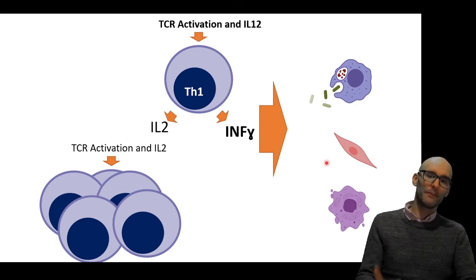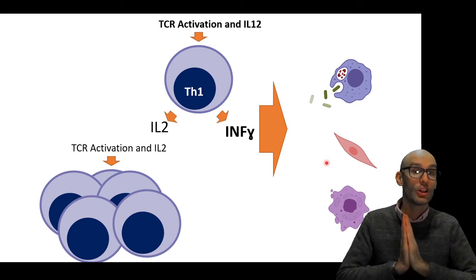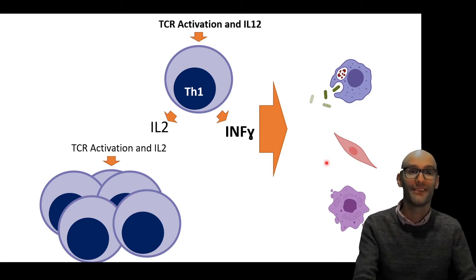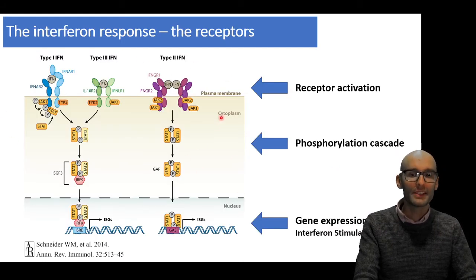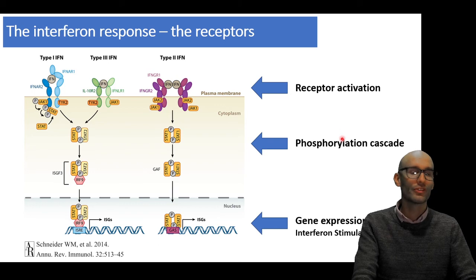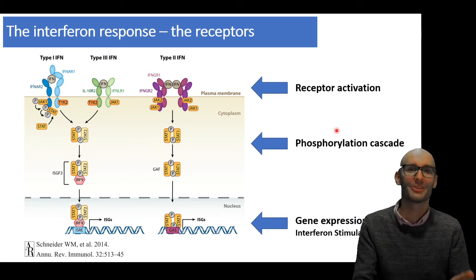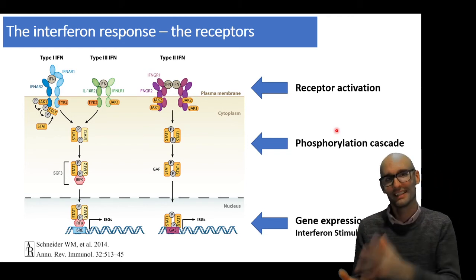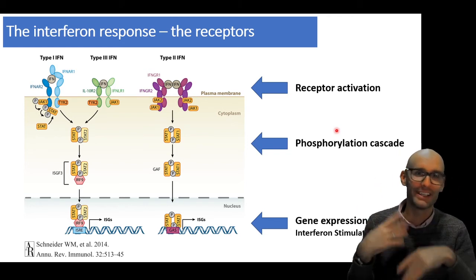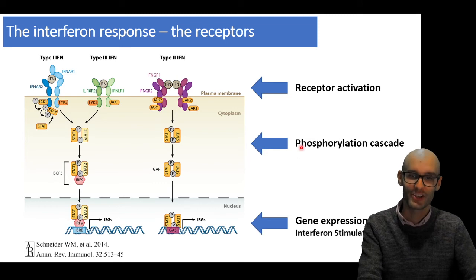So interferon gamma, if you remember, can affect loads of cells. Lots of cells have the interferon receptors. There's several different kinds of receptors, and essentially they cause just a phosphorylation cascade, which is how most of these receptors work, including the IL-12 receptor, including the TCR.